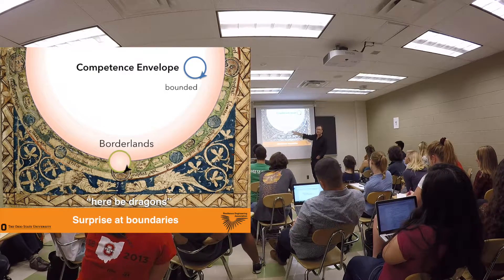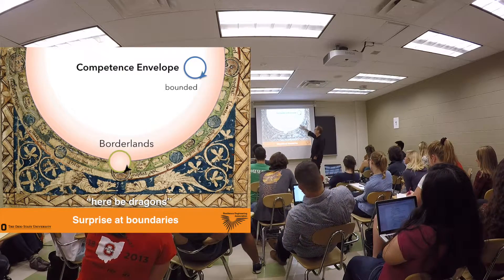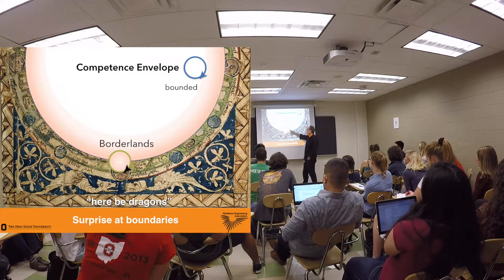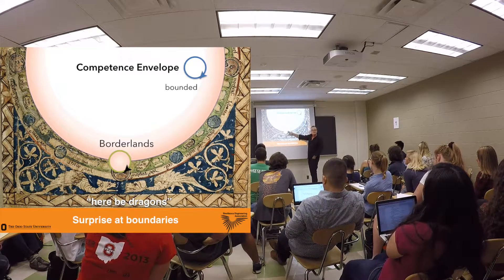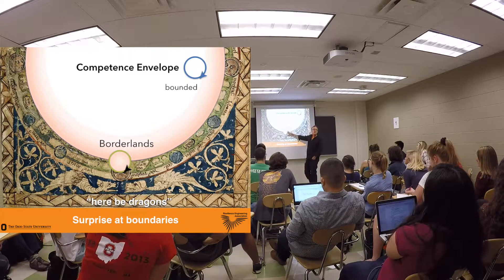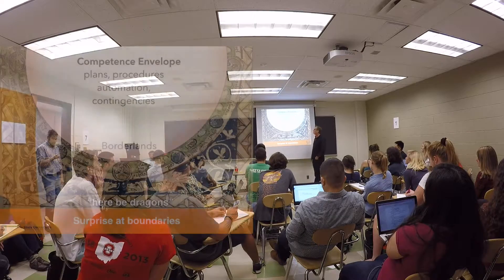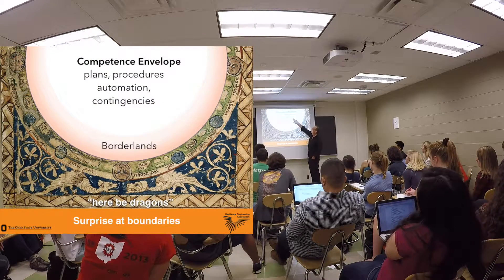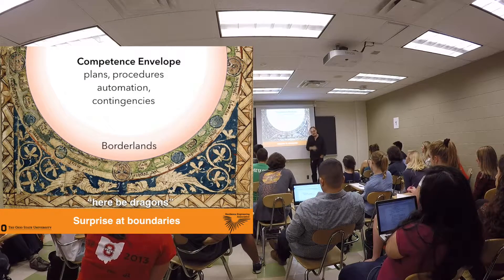And there's a boundary. We're going to call those borderlands for a reason. It's bounded, and the boundary isn't always clear and it moves around — so we're going to call it the borderlands. So: borderlands, competence envelope, plans, procedures, automation, and contingencies.